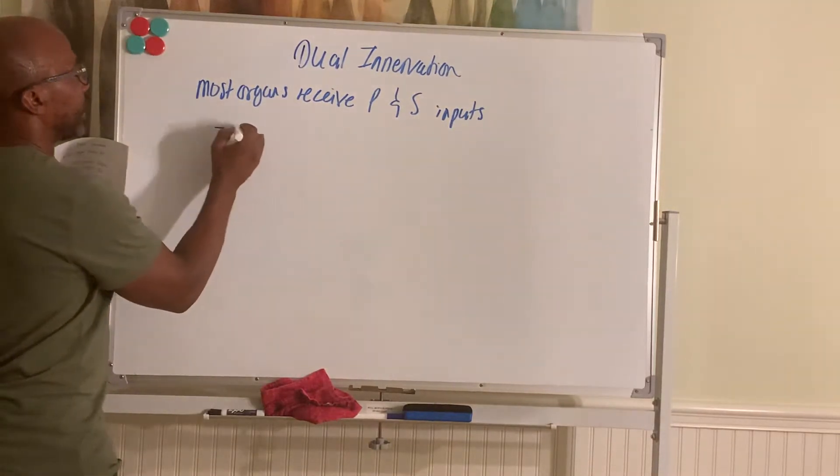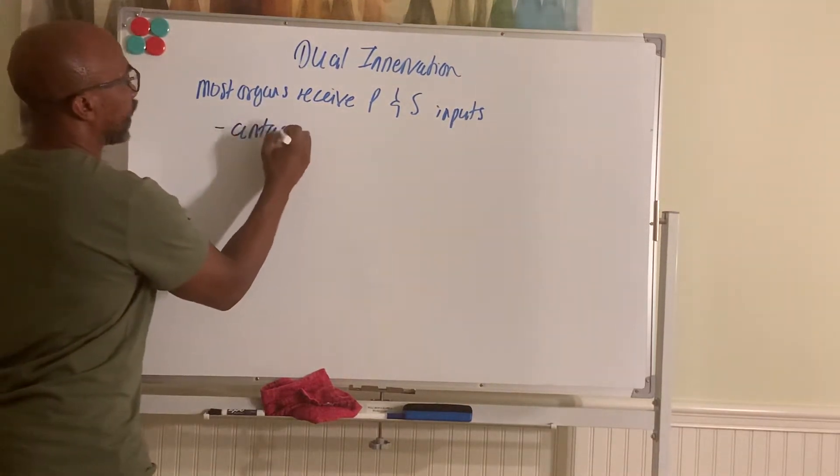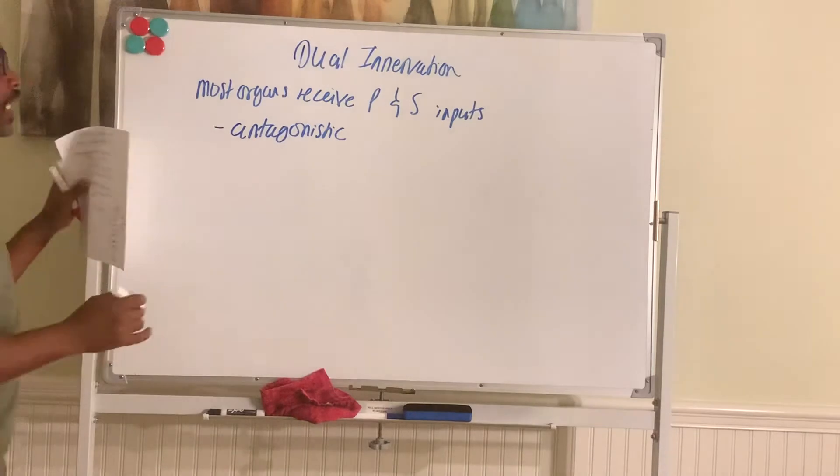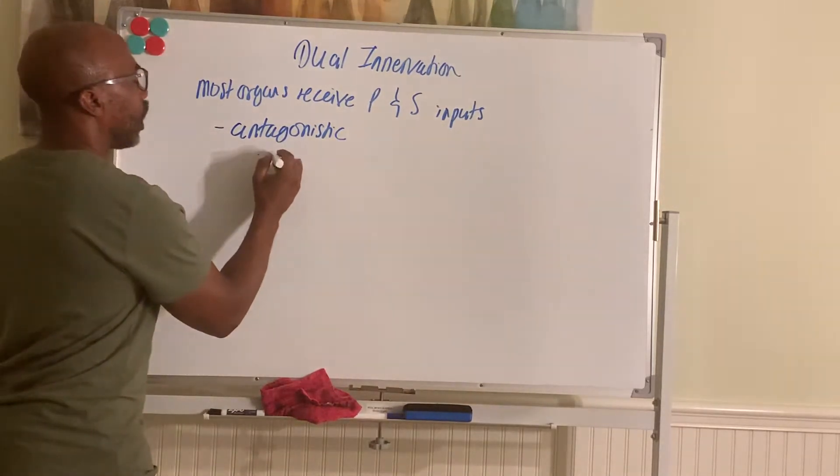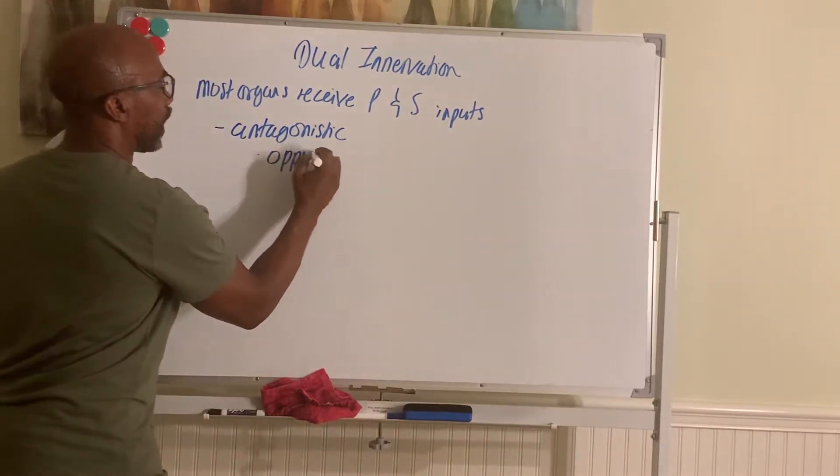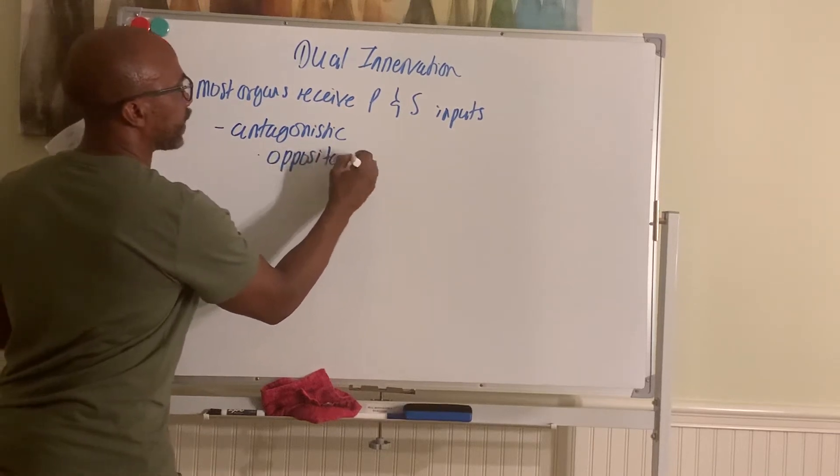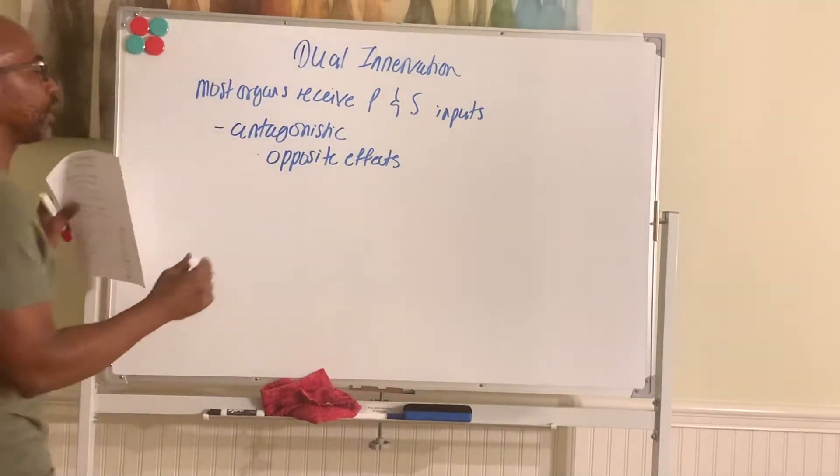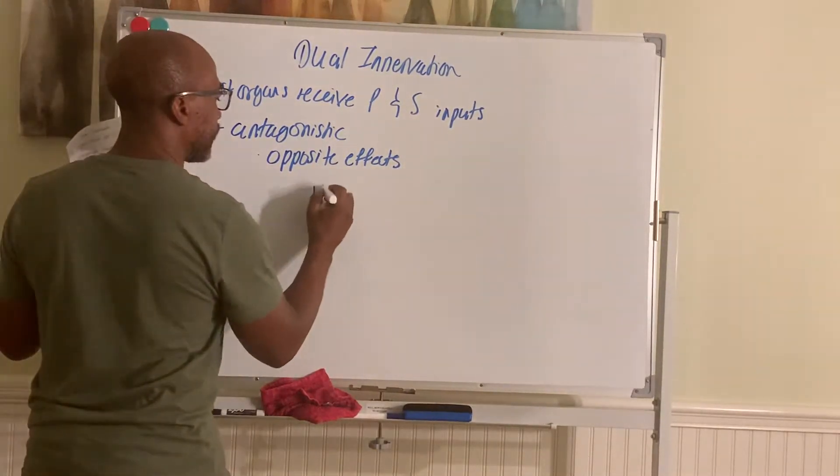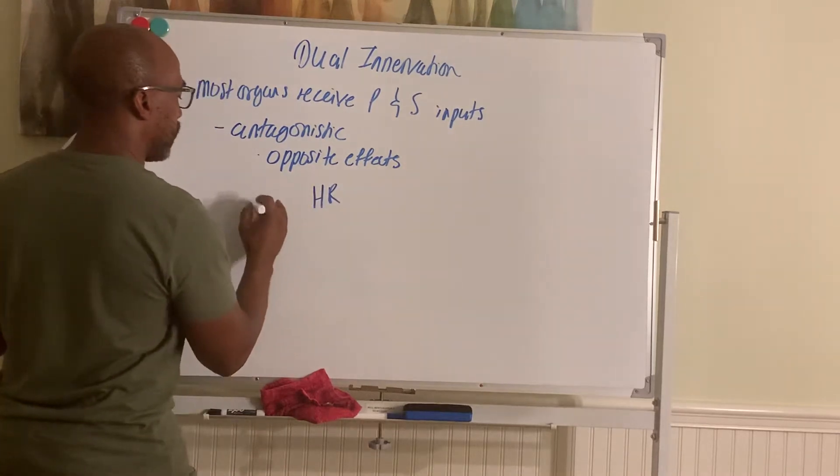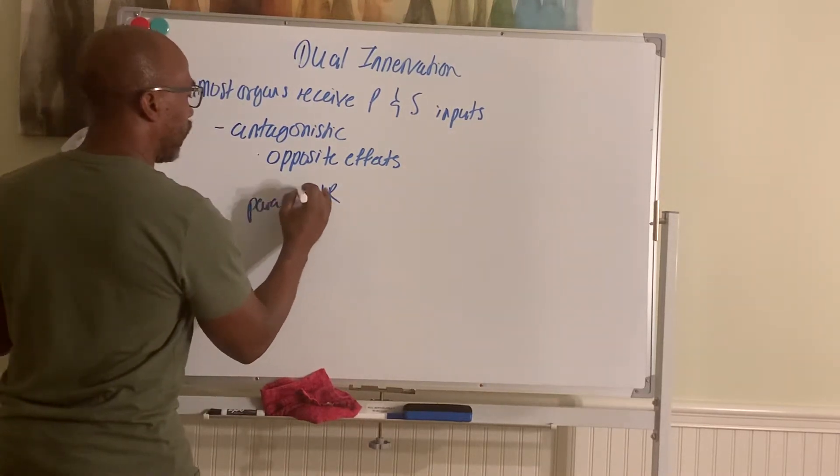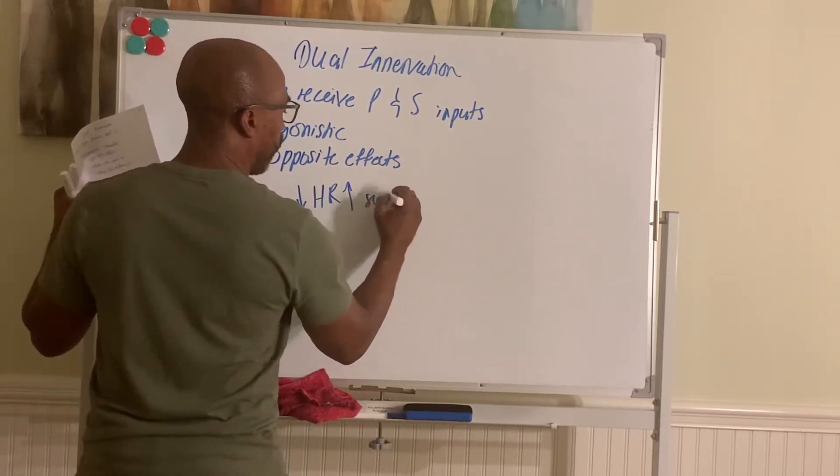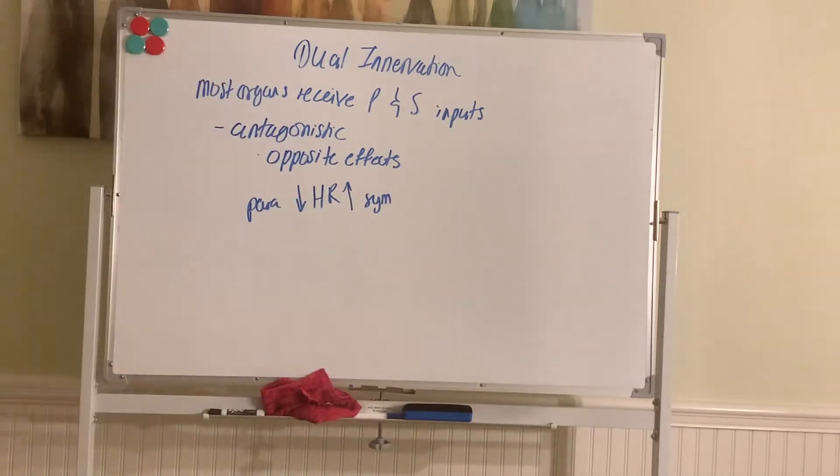So for example, in antagonistic interactions between the divisions, they oppose the same organ. For example, for heart rate, para will decrease heart rate, while simpa will increase heart rate. Opposing effects.